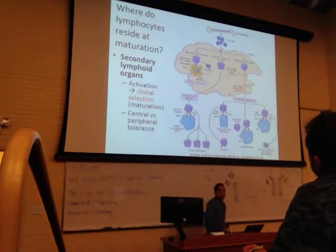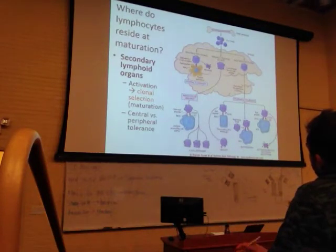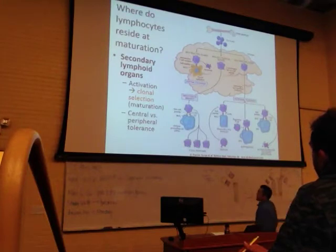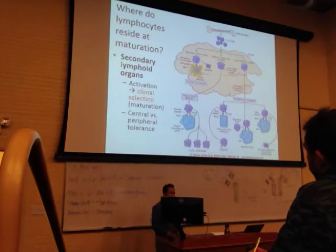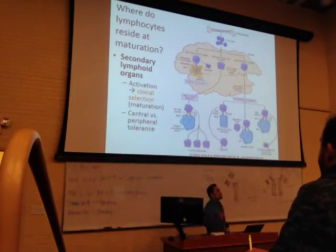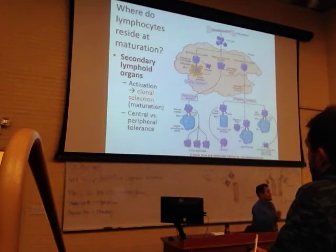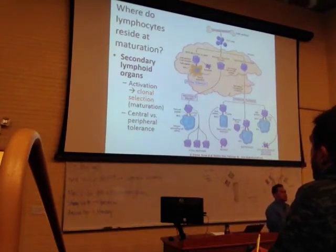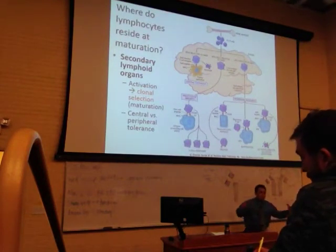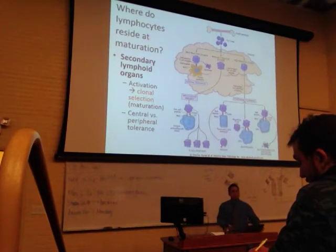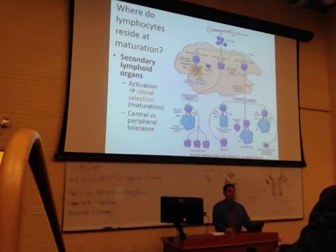After the thymus, T cells go to secondary lymphoid organs — lymph nodes or lymph tissue. In Anatomy and Physiology 202, we may not have fully unpacked what lymph nodes are doing for us. What's the function of lymph? Filter the blood, fluid recovery, scan for infection.